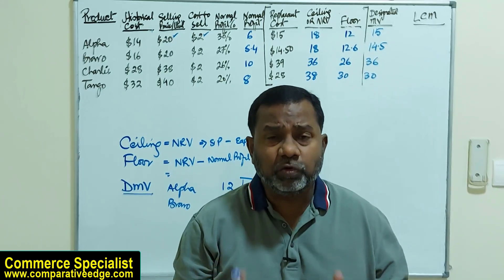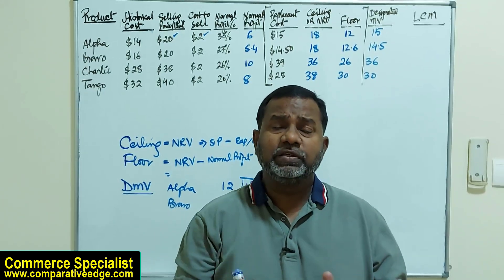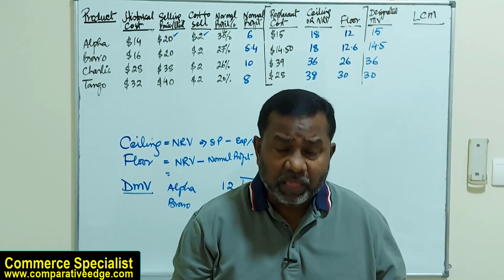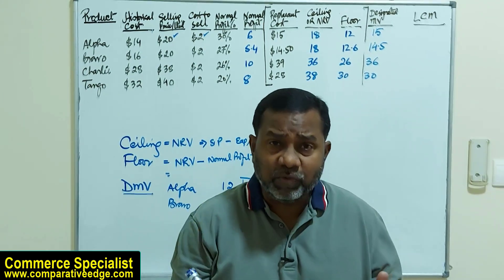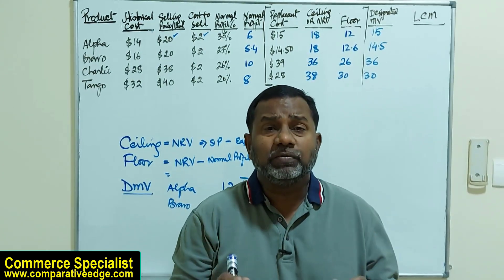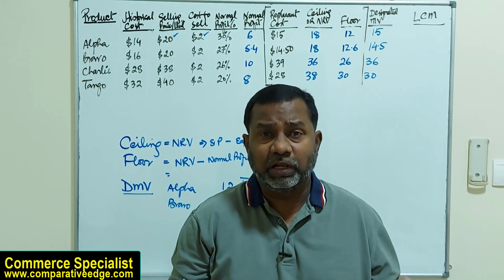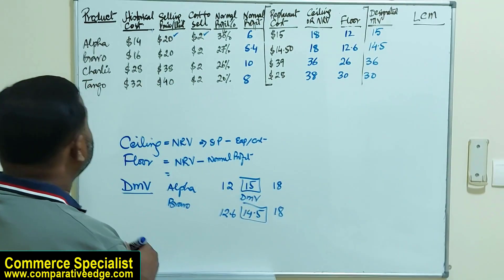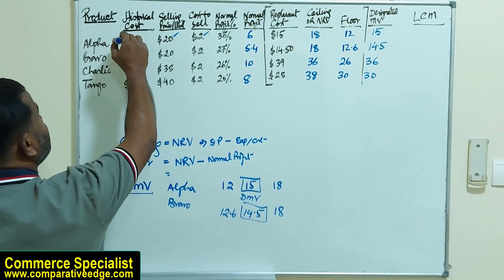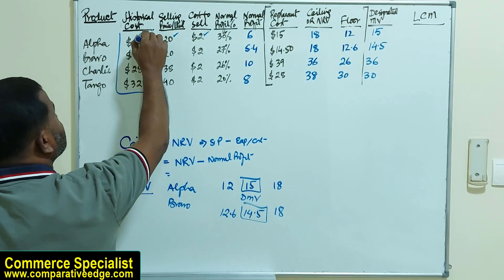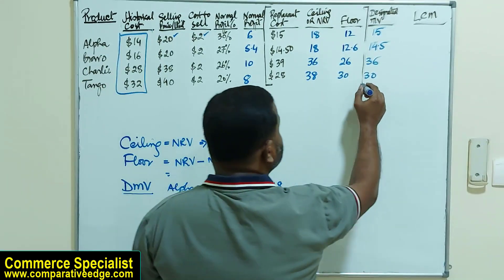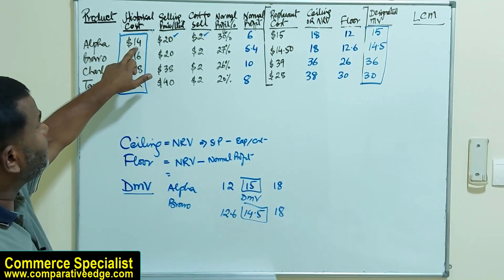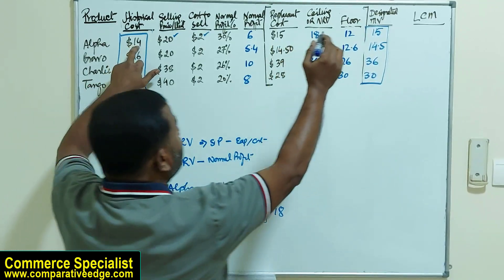Now that we have the designated market value, as per ASC 330, inventory is to be valued applying the concept of LCM, which is lower of cost or designated market value. By cost we mean historical cost. If we look at Alpha, its historical cost is $14 and designated market value is $15.